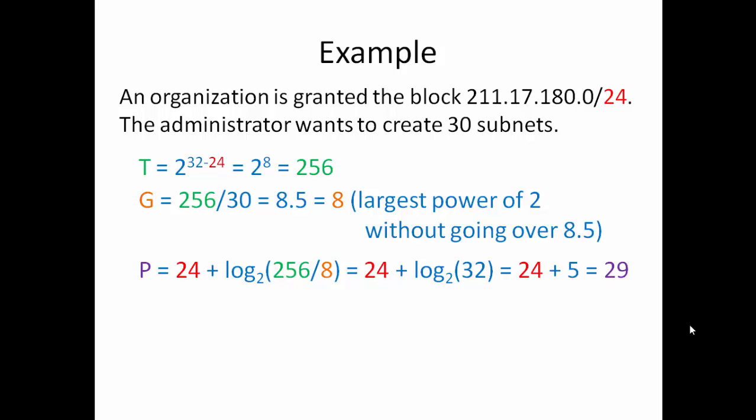Our next thing we need to figure out is going to be our P or our prefix. We need that prefix for our subnet because our starting address is going to be 211.17.180.0. That's not our first usable address. That's going to be our network address.